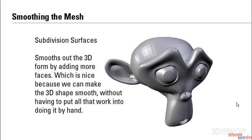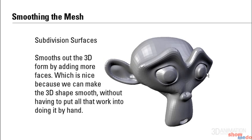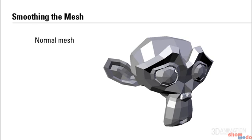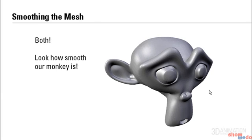The second way is subdivision surfaces. This smooths out the 3D form by adding more faces, which is nice because we can make the 3D shape smooth without having to put all that work in by hand. So we can do what's called a cage, which looks like a blocky mesh, and then smooth it out. But even the subdivided model still doesn't look smooth because it has a bunch of small faces on it. All we have to do is use both Gouraud shading and subdivision surfaces, and then we can have a shape that looks completely smooth.